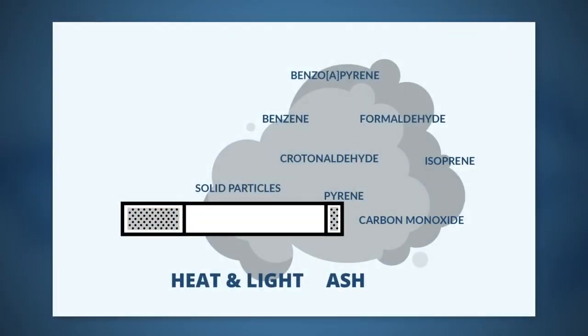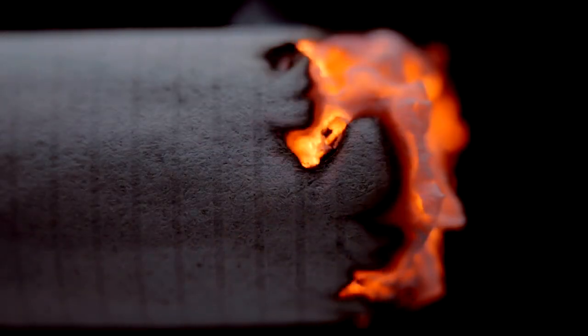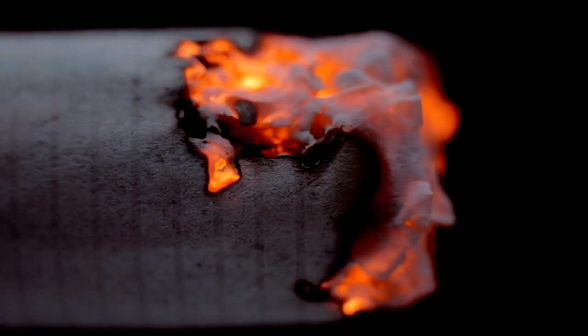Cigarette smoke contains solid particles — soot — and liquid droplets, and it contains thousands of chemicals, out of which a hundred or so are recognized by health authorities to be harmful or potentially harmful. The smoke particles are generated from the high temperature processes happening during combustion.